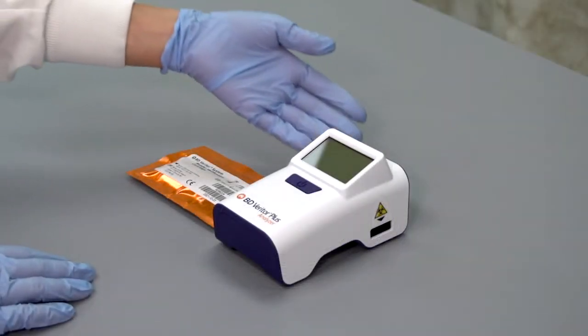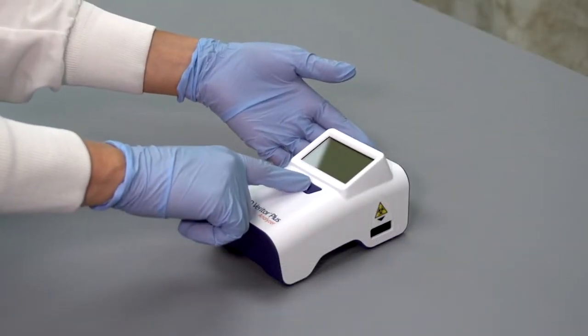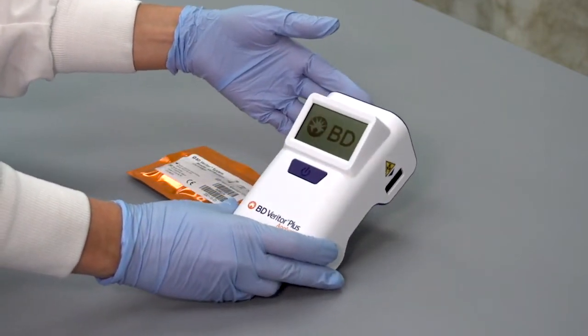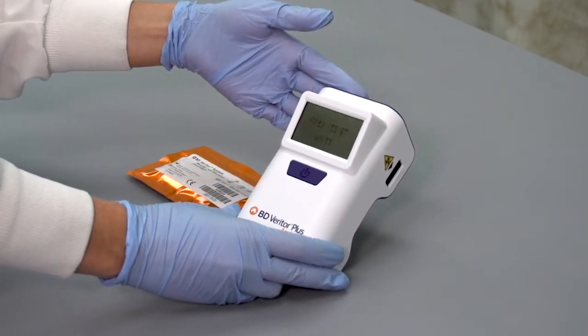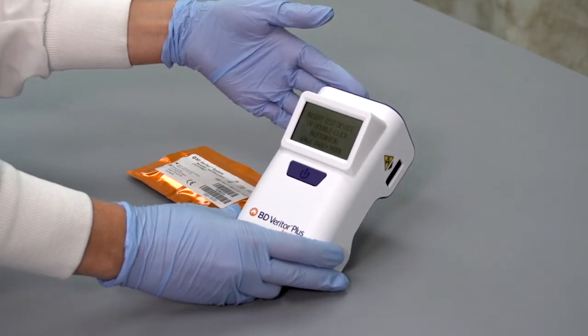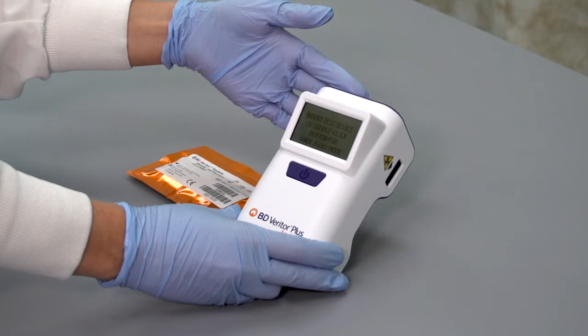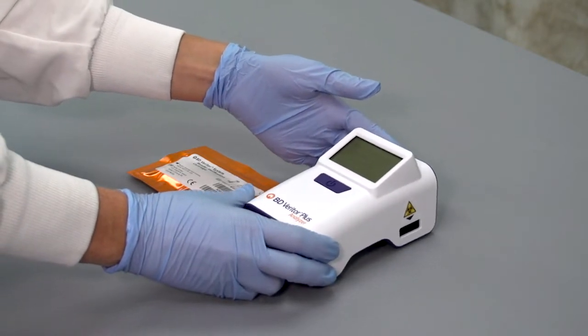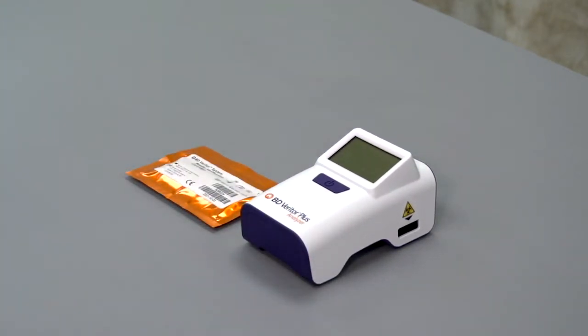Next, to power the analyzer, press the center of the blue power button on the face of the analyzer and release. The LCD screen will show the BD logo during startup. The analyzer then goes through a brief self-test routine. The software version will appear on the LCD display and then the self-test result will be displayed. This instrument internal system check is carried out every time the instrument is powered on.